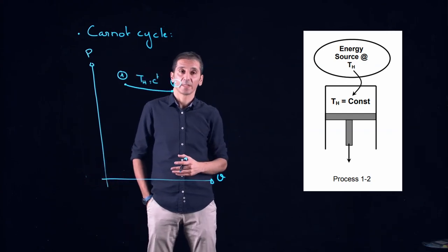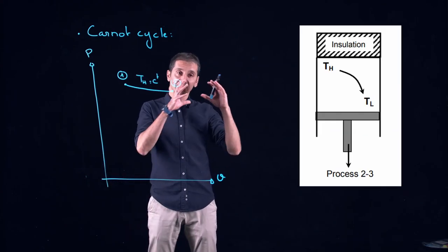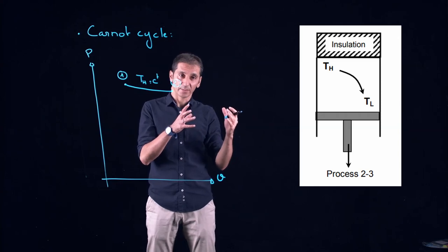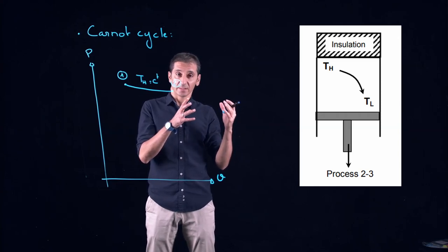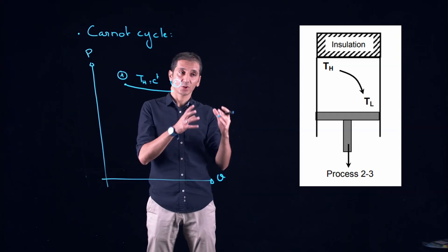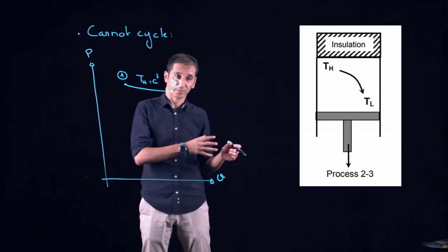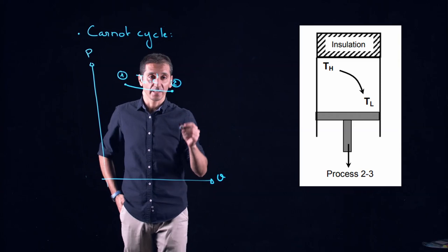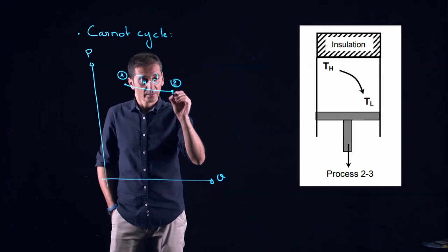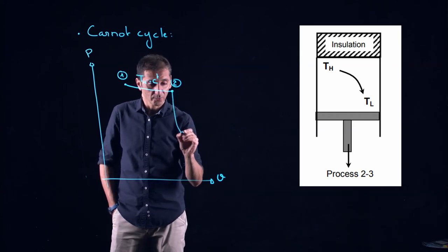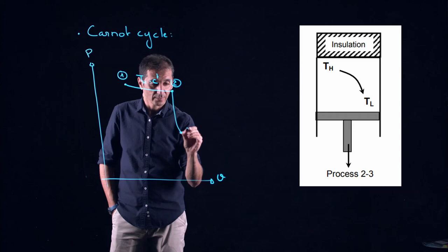After this what we will do is that we will insulate our cylinder. The consequence is that the temperature of the gas will drop from TH to TL pushing the piston down. This will lead us to state three and this process is an adiabatic expansion.